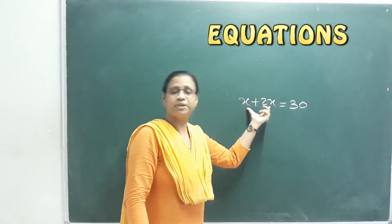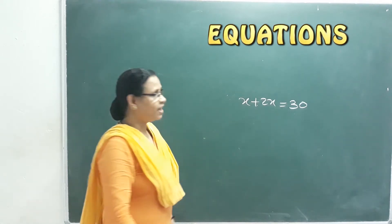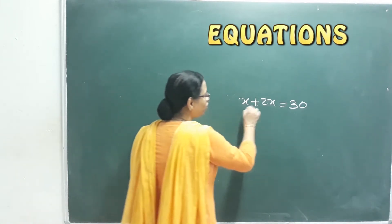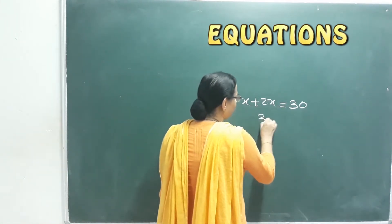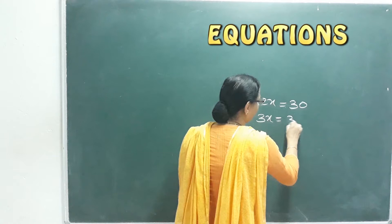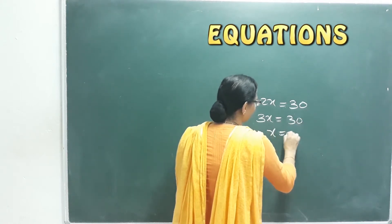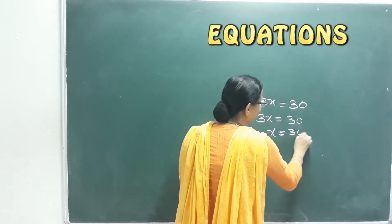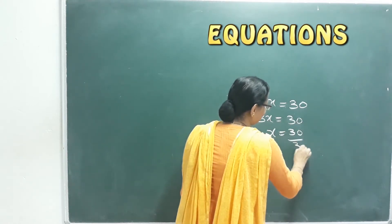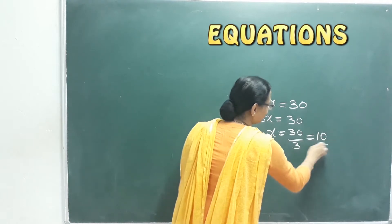What do we call the expression? Let's add this together. 3x is equal to 30. x is equal to 30 divided by 3. That is equal to 10.